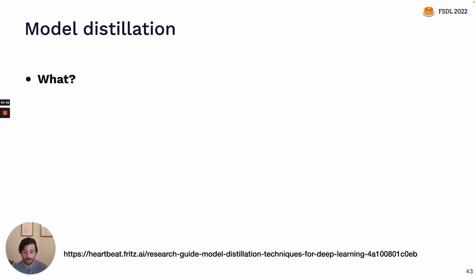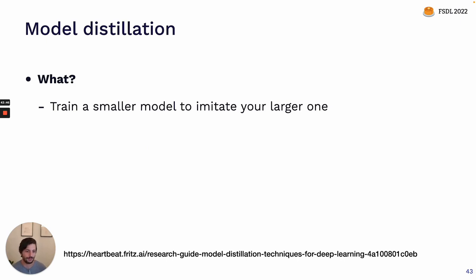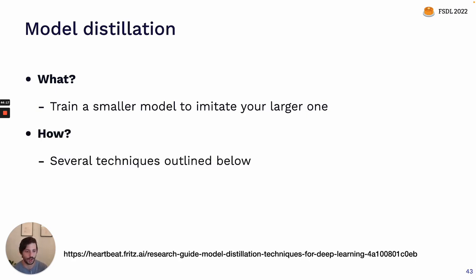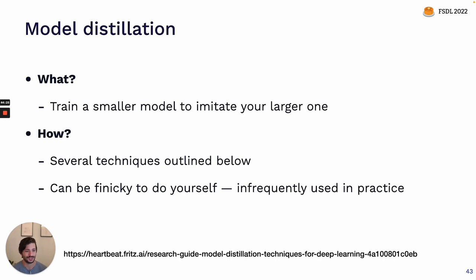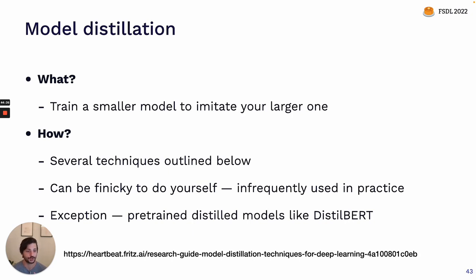The next technique is model distillation. Model distillation means once you have your model — maybe a very large or expensive model that does very well at the task — you can train a smaller model that tries to imitate the behavior of your larger one. This is generally a way of taking the knowledge your larger model learned and compressing it into a much smaller model. It's worth noting this can be tricky to do on your own and is relatively infrequently done in practice. A big exception is that there are often distilled versions of popular models — DistilBERT is a great example — that are pre-trained for you and available for use with very limited performance trade-off.